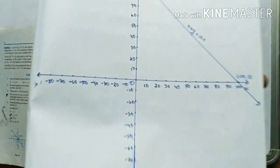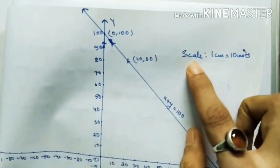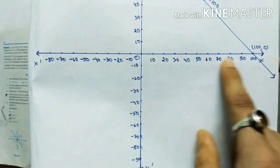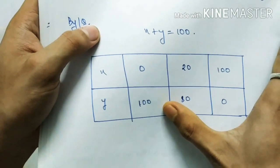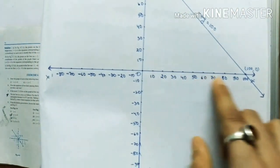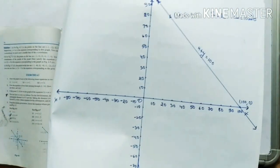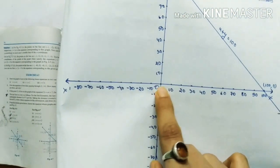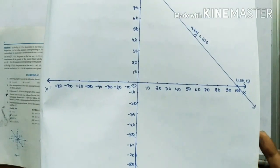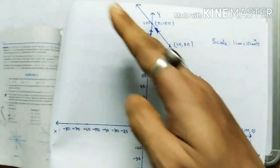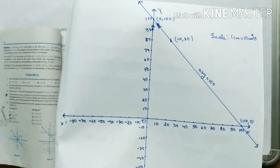For the graph, use a scale of 1 centimeter equals 10 units, since the values go up to 100. If you use 1 centimeter equals 1 unit the graph would become very large. With this scale, plot the points and draw the straight line representing x plus y equals 100.